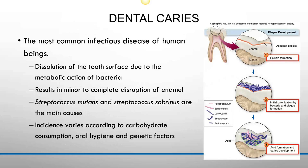Starting with dental caries — dental caries are cavities. If you've ever had a cavity, that is what a dental carie is. The most common infectious disease of human beings is cavities. It involves dissolution of the tooth surface due to metabolic actions of bacteria, resulting in minor to complete disruption of the enamel. The most common causes include Strep mutans and Strep sabrinus.